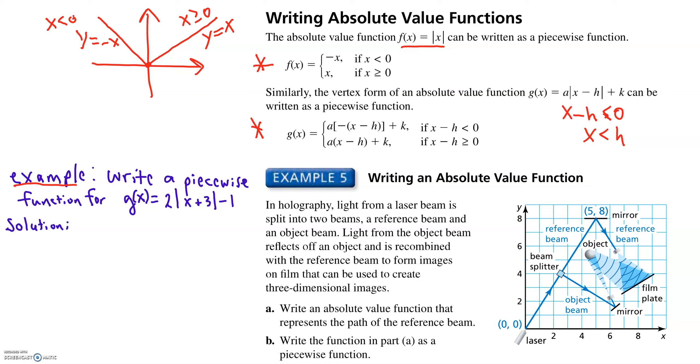So what we're going to do is we're going to do this. If x plus 3 is less than 0, we're going to have the equation 2 times,